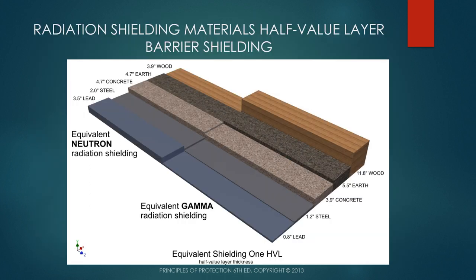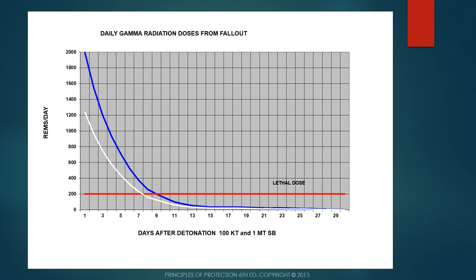Different materials shield different types of radiation. For neutron radiation: 3.5 inches of lead reduces it to half, 2 inches of steel reduces it to half, and 4.7 inches of earth reduces it to half. For gamma radiation: 0.8 inches of lead reduces it to half, 1.2 inches of steel reduces it to half, and 5.5 inches of earth reduces gamma to half. These are half-value layers. In ENW they build the layers into one-tenth values, but those increments are too large, so I use the half-value layer system.